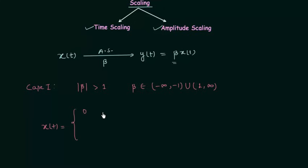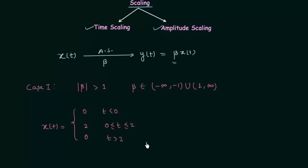The original signal x(t) is equal to 0 when time t is less than 0; it is equal to 2 when time t is greater than or equal to 0 and less than or equal to 2; and it is 0 when time t is greater than 2. This is how the original signal x(t) is defined, and now I will plot it based on this information.